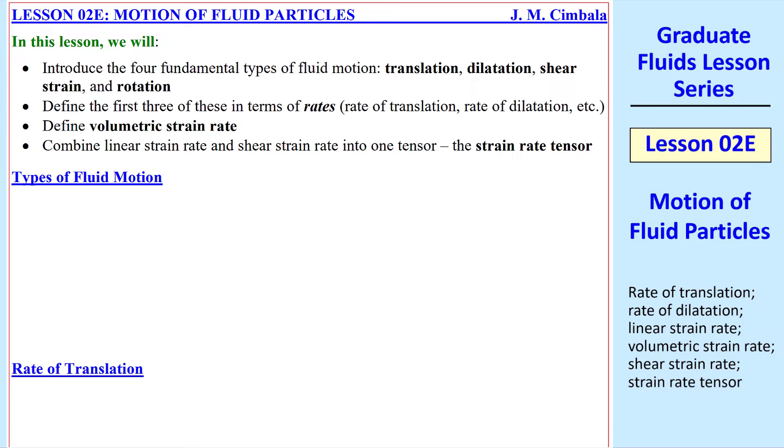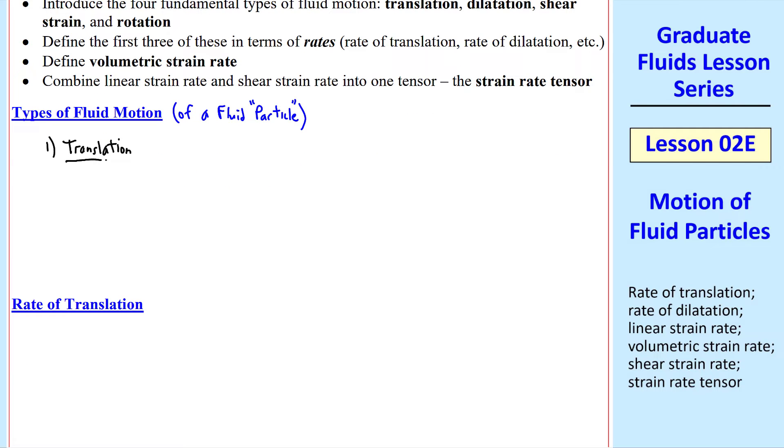There are four types of fluid motion for a fluid particle. The first one is translation. I'm going to use a simple square to indicate the fluid particle. Translation means it simply moves from one place to another, and I'll use red to indicate the new location and or shape. Translation is simply movement.